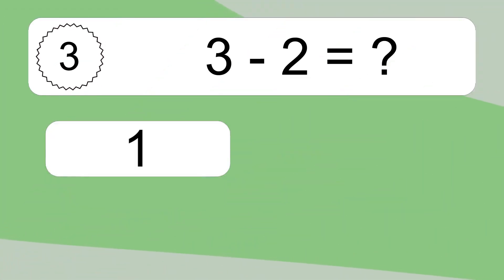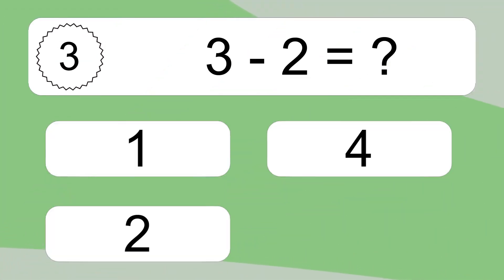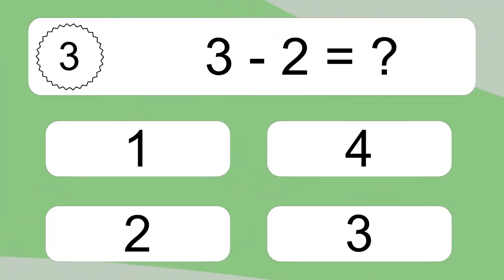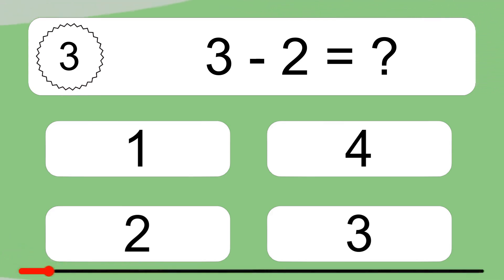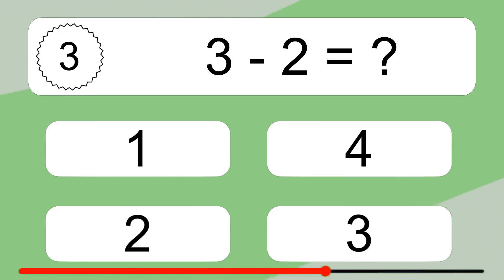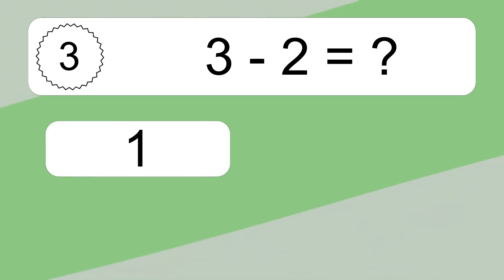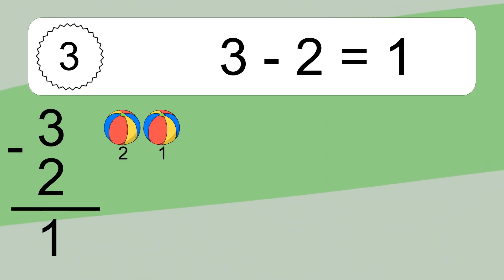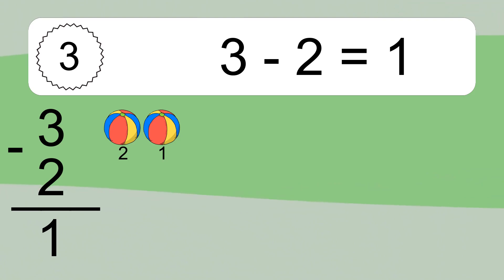3 minus 2 equals what? 3 minus 2 equals 1. Let's count it: 2, 1.